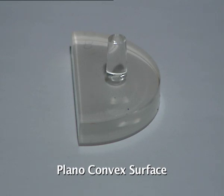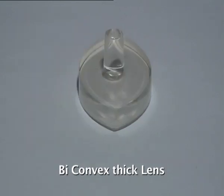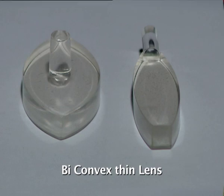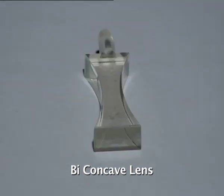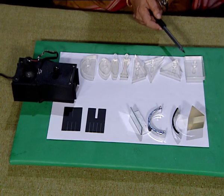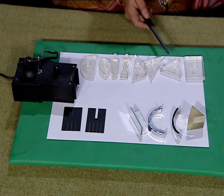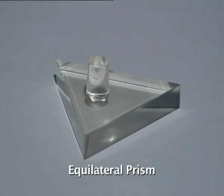This is a plano-convex surface, biconvex thick lens, this is also biconvex thinner than this one. Biconcave lens, these are all prisms the three of them here, but the angles are different. This is an equilateral prism, right angle prism.